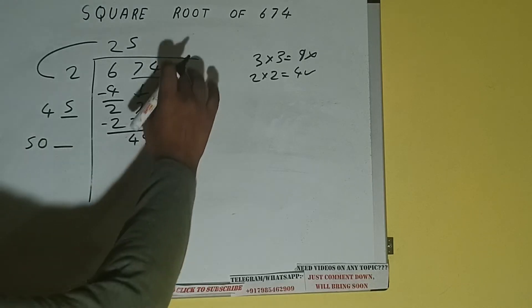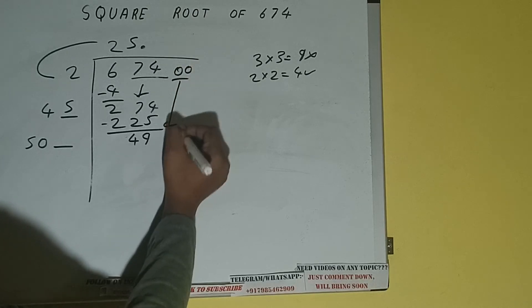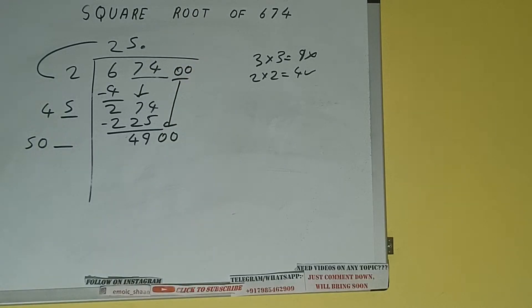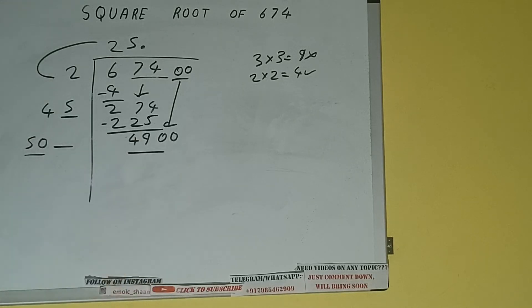And this number we need to make it big, but we don't have more pairs, so we'll put a decimal. Once I put decimal, we can bring a pair of zeros down, and it will be 4900.